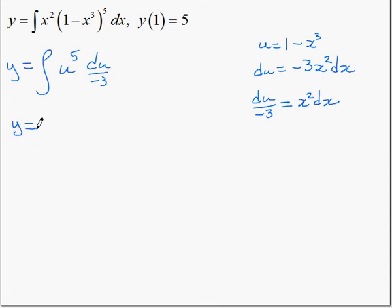So we remove the constant, which is -1/3. u⁵ becomes u⁶/6, plus C.